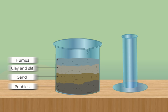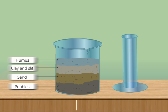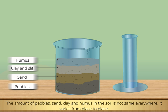Humus is lighter than the water. Thus, it floats on its surface. Do you know the amount of pebbles, sand, clay and humus in the soil is not same everywhere? It varies from place to place.